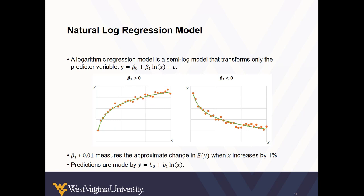Alternatively, a logarithmic regression model is a semi-log model that transforms only a predictor or independent variable. In this scenario, beta 1 multiplied by 0.01 measures the approximate change in the estimated value of y when x increases by 1%.